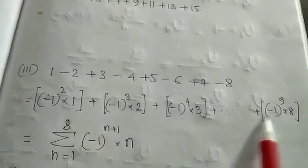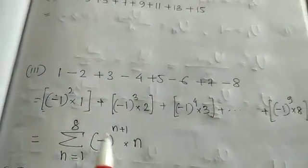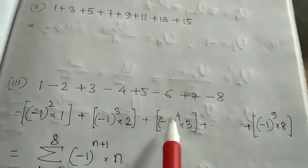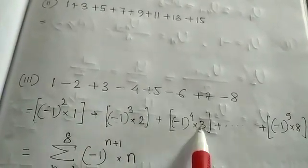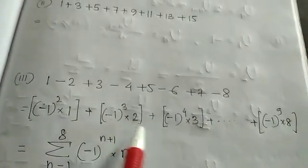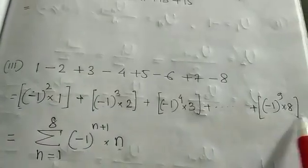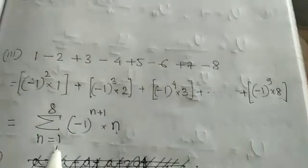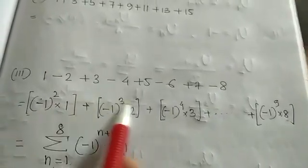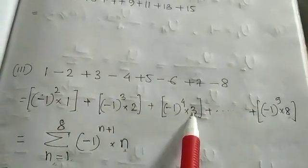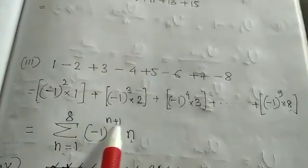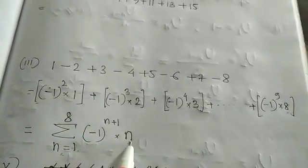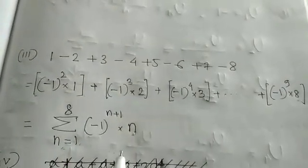Minus 1 is common to all, so I wrote minus 1 here. The numbers 1, 2, 3... are present, and the power is always 1 more than the number. So I replaced the number by n, going up to 8, making the power n plus 1. The value of n goes from 1 to 8. If I put n equals 1, the power is 1 plus 1 equals 2; if n equals 2, the power is 3 — and that gives the correct result.